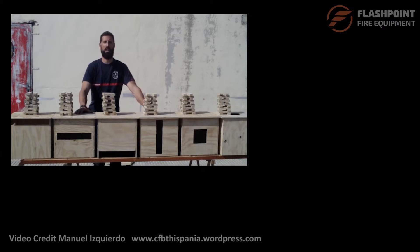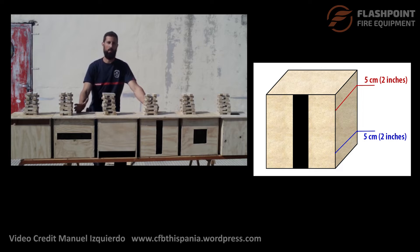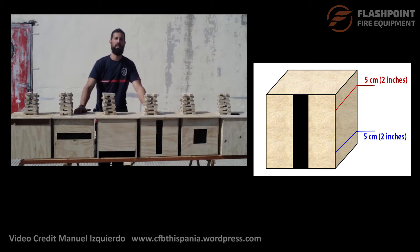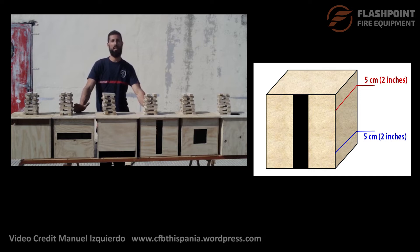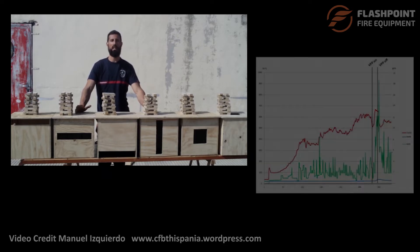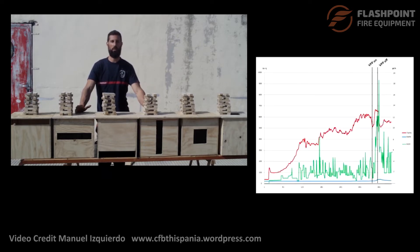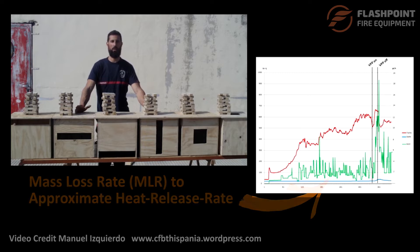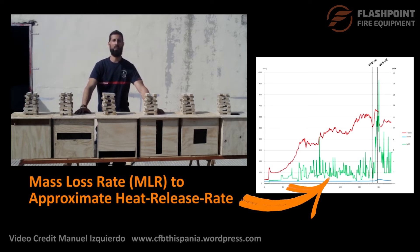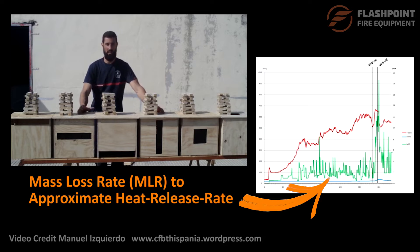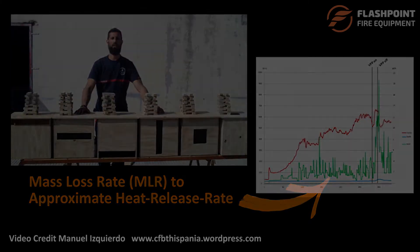Temperatures will be measured at 5 centimeters down from the ceiling, displayed in red, and 5 centimeters above the floor level, displayed in blue. In addition to temperatures, we will also measure the mass loss rate as an approximation of heat release rate, shown in green on the data charts.